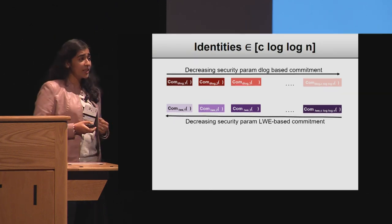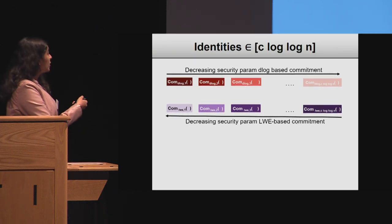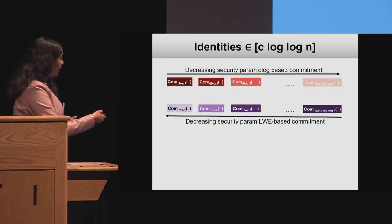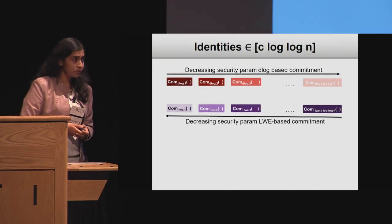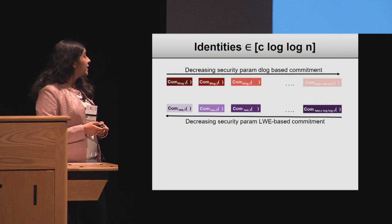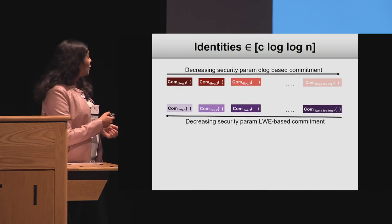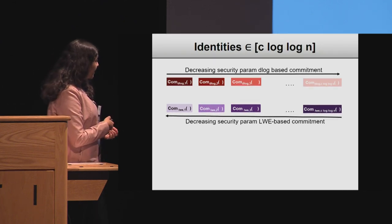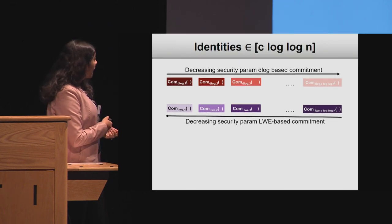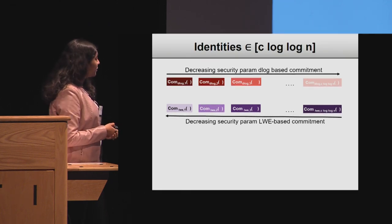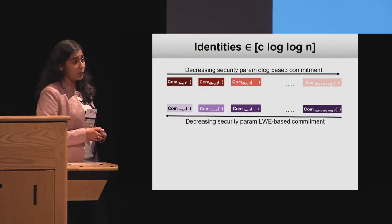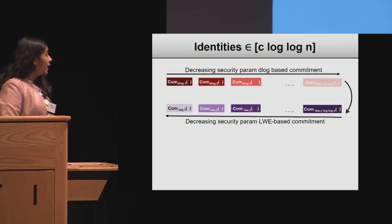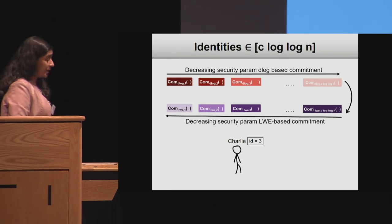On the other hand, in the quantum world, all of the discrete-log-based commitments are broken, and the LWE-based commitments are progressively less secure in the other direction. How do we construct non-malleable commitments out of this? Let's do it with an example.